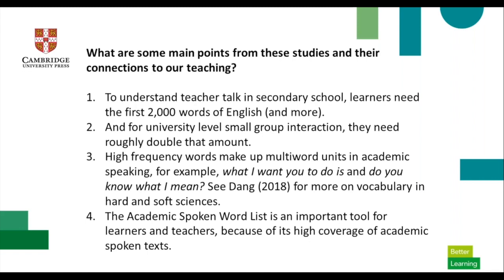The next point is around multi-word units, and we need much more research here. The Academic Formulas List by Simpson-Vlach and Nick Ellis at Michigan State University is particularly useful. They looked at corpora, talked with teachers and testers, and found shared formulas between writing and speaking, formulas just for speaking, and formulas just for writing. Yen Dang has also written on vocabulary and speaking in the hard sciences and soft sciences. There's also a new article by Lei and Liu on multi-word units and academic speaking.